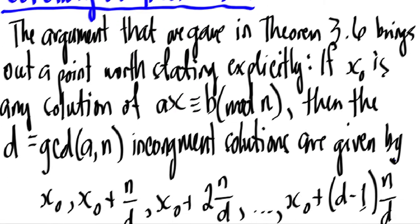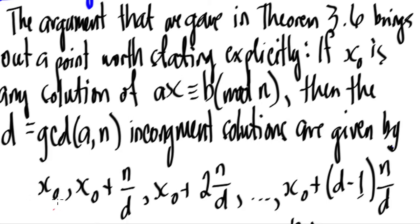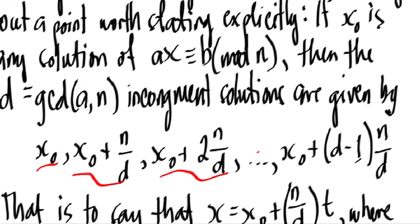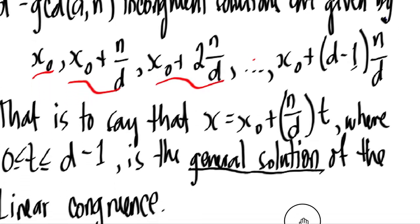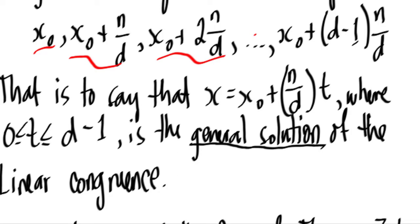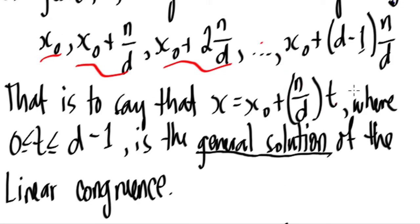We will have first x₀, x₀ + n/d, x₀ + 2n/d, and so on up until x₀ + (d-1)n/d. That is to say that x = x₀ + (n/d)t, where t can be anything from 0 to d-1.